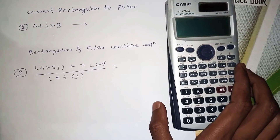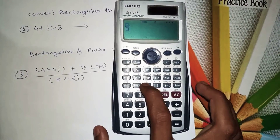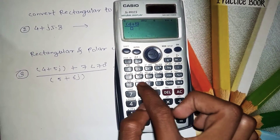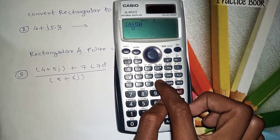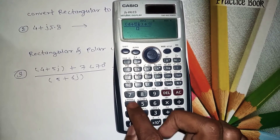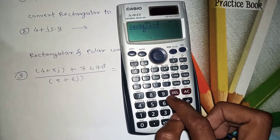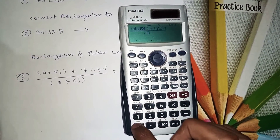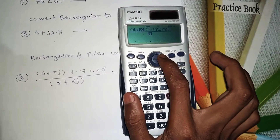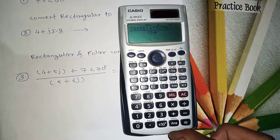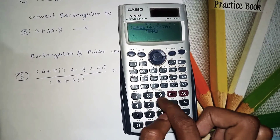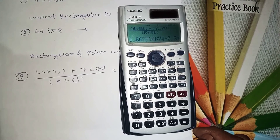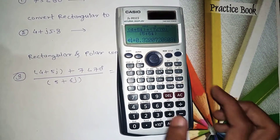Now we will see another example with a combined rectangular and polar equation. Take in brackets 4 plus 5i — press shift for i — then the angle symbol, close the bracket, plus in a bracket 7 at angle shift 70, close the bracket. In the denominator, in brackets 5 plus 6i, shift angle, close the bracket. Press equal — the answer comes in rectangular form.